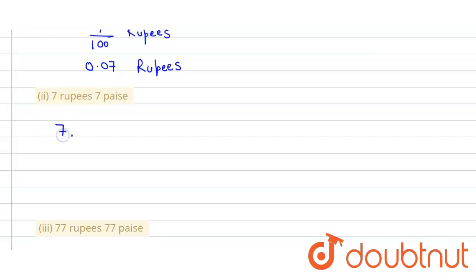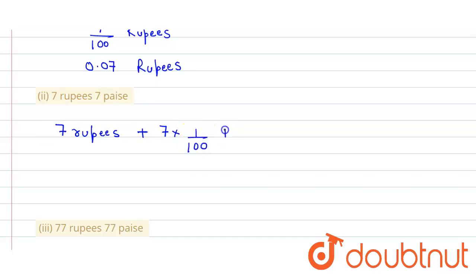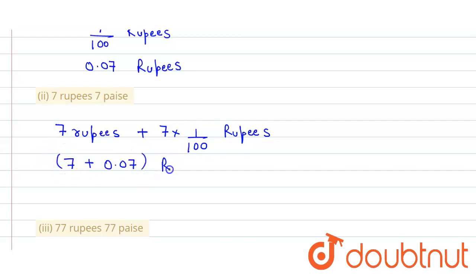Similarly, for the second part — 7 rupees and 7 paise — 1 paise equals 1/100 rupees, so it becomes 7 plus 0.07 rupees. When we add them, we get 7.07 rupees.